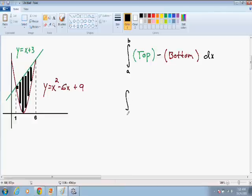Our a we know is 1. Our b we know is 6. Our top function is the curve where the top of the rectangles are touching. Notice the top of every rectangle is touching the green curve. So the green curve is our top function which is x plus 3 minus our bottom function which is the curve in which the bottom of the rectangles are touching.